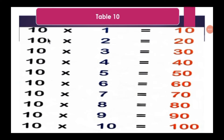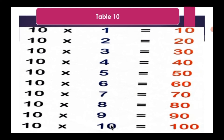Table 10. 10 ones are 10, 10 twos are 20, 10 threes are 30, 10 fours are 40, 10 fives are 50, 10 sixes are 60, 10 sevens are 70, 10 eights are 80, 10 nines are 90, 10 tens are 100.